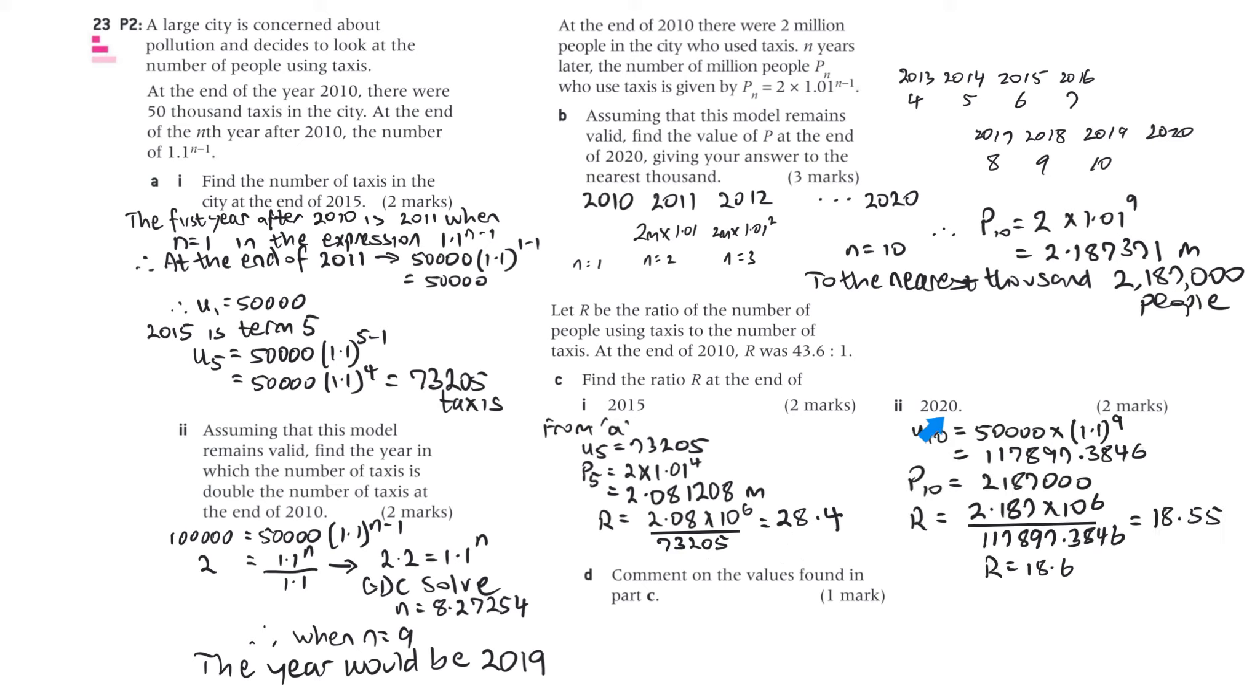Okay, for 2020, the number of taxis, we can use this formula here. Now, we know that 2020 is when n equals 10, because that's at the end of 2019, so that would be the beginning of 2020. So that's 50,000 times 1.1 to the power of 10 minus 1, which is that number. That's the number of taxis. The population we found out here in part B, so we know that was 2,187,000, and the ratio is 18.55. In three significant figures, that's 18.6.